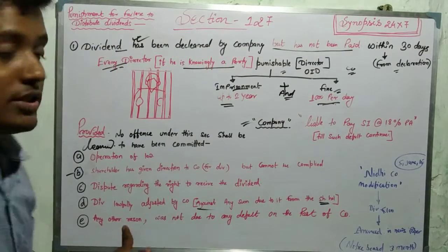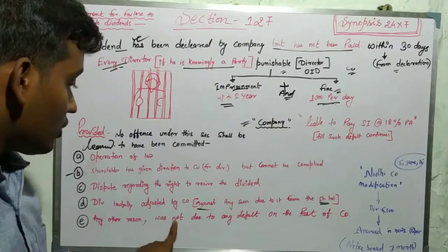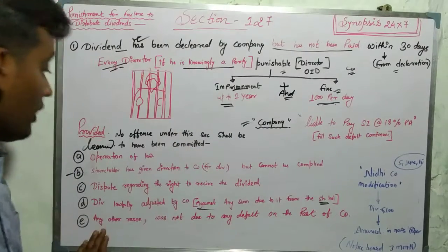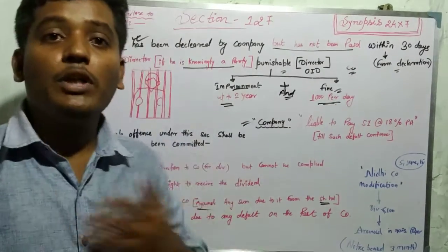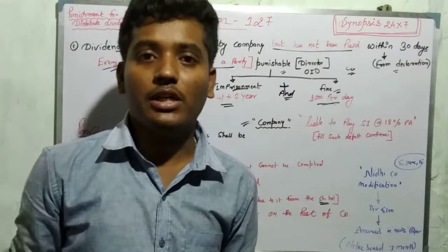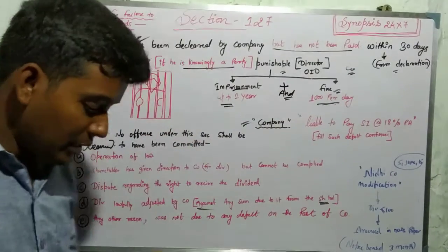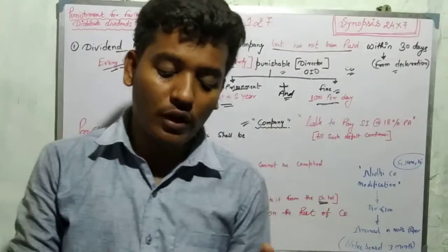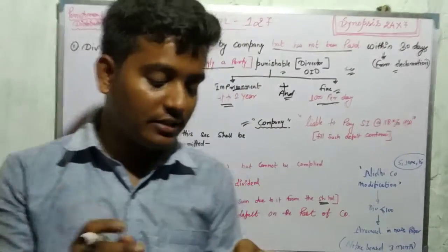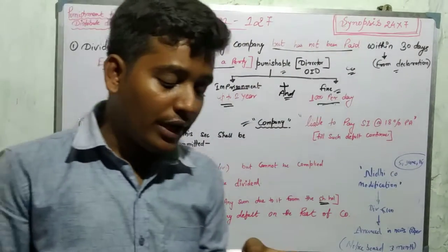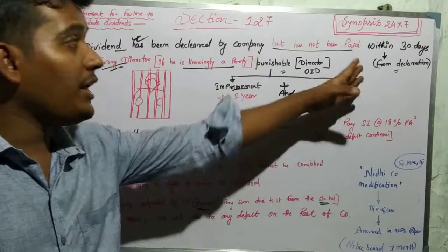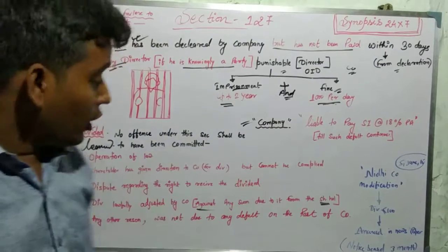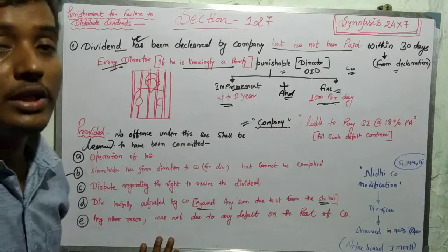Fifth, any other reason where the failure to pay dividend within 30 days was not due to any default on the part of the company. The company didn't default, it happened for some other reason. If there is no default by the company itself, the company is innocent, so when the company is innocent, there will be no penalty.